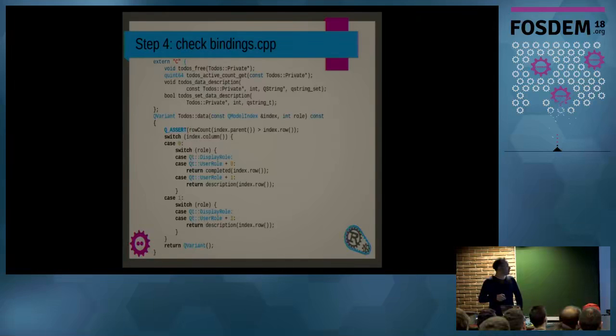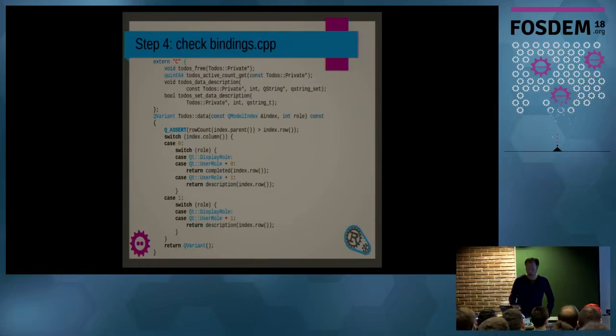And here is a bit of example code, which is typical for this data model. You have the class and as a function data, you give it an index and a role. And the role can be, I would like to have a display or a color or, in our case, the description or if it's completed or not. That can also be a role. And then, here's a big switch statement, which calls into the Rust code. So, it calls to Rust and asks, get me the completed version for this index or the description for this index. And again, all of this is generated. So, you don't have to worry about it.